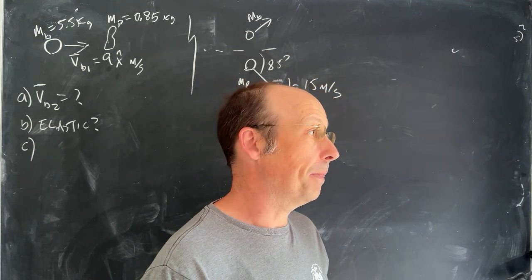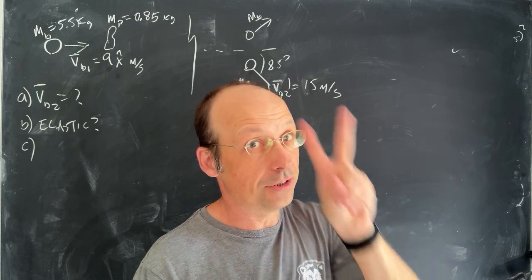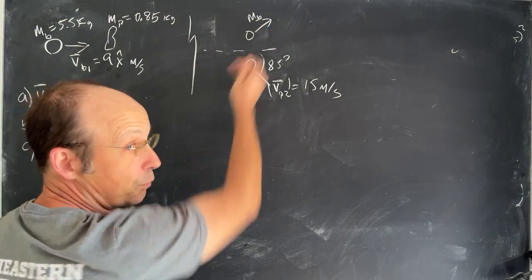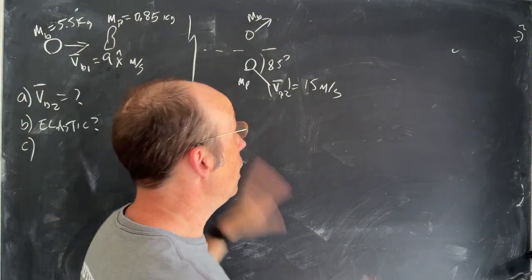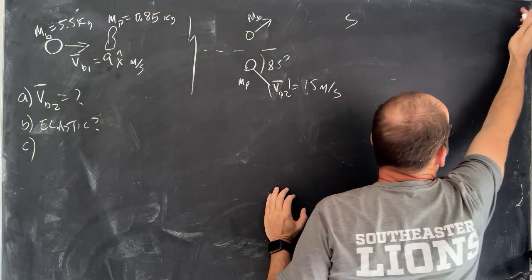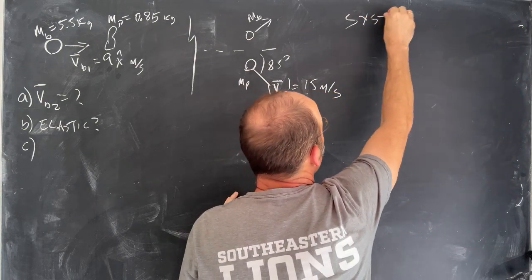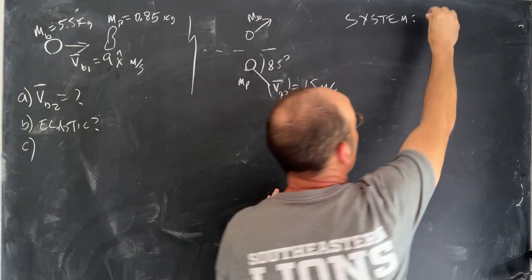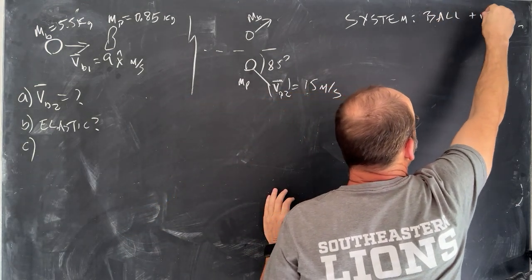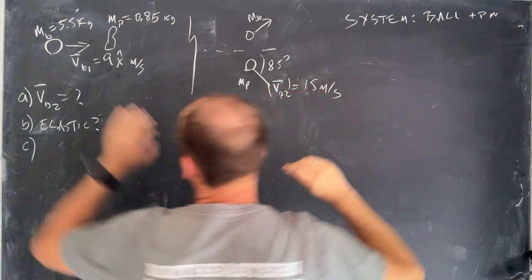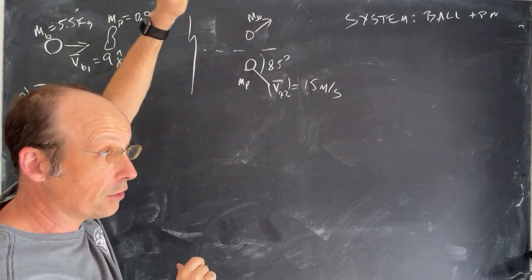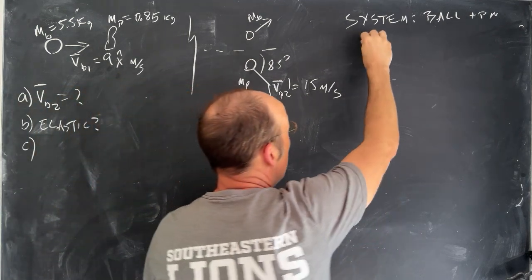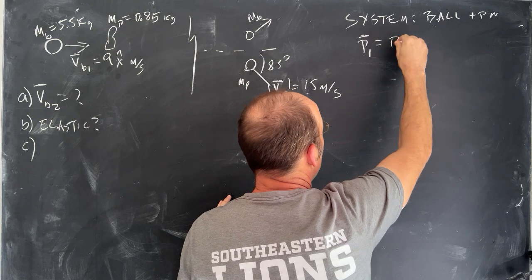This one's not too bad. Elastic two-dimensional collisions get tricky, but in this case, if we know two of the velocities and we're just trying to find the other one, it's not too bad. We need to define our system, because you can't do conservation of momentum until you say what the system is. It's going to be the ball plus the pin. Right before and right after the collision, there's no external forces acting on the system, so momentum is conserved. I'm going to write that as P1 equals P2.